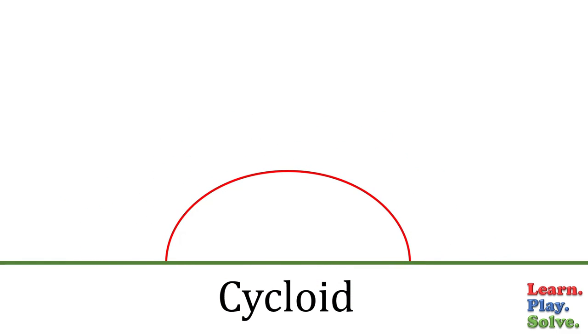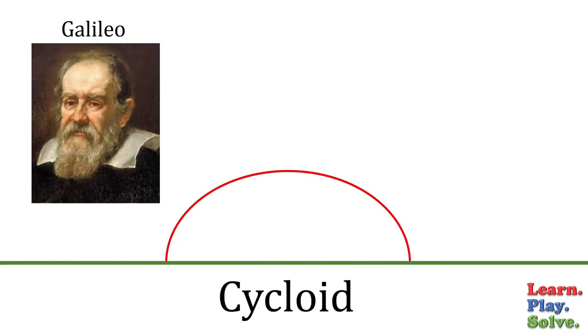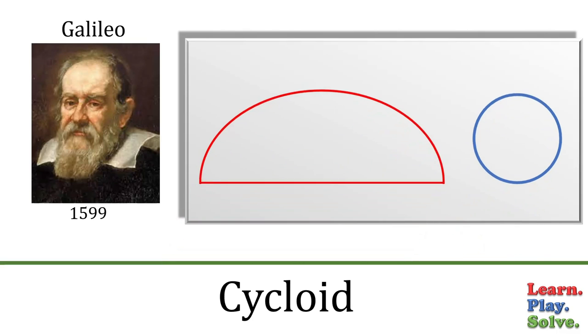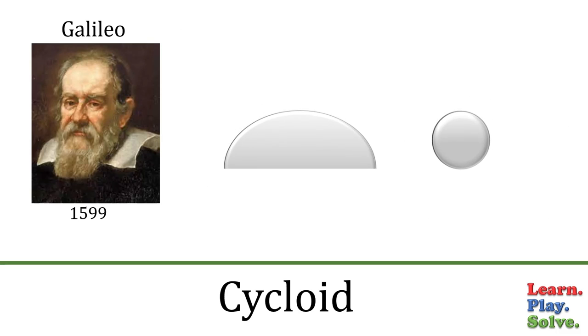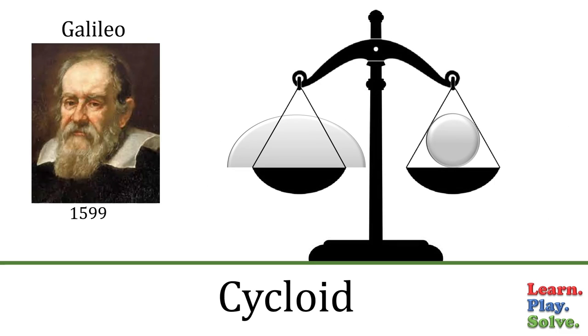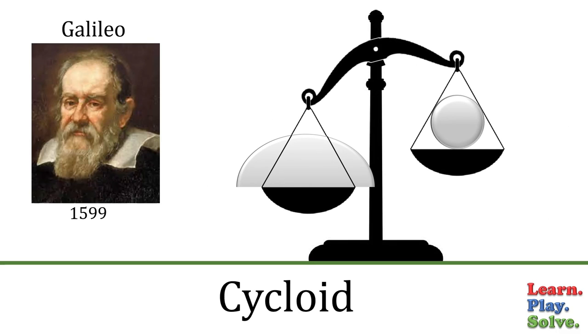The name cycloid was conceived by Galileo. In 1599, he attempted to find the area under the curve by tracing both it and the circle onto sheet metal. He then cut them out and weighed them, and what he discovered was that their ratio was exactly 3 to 1.